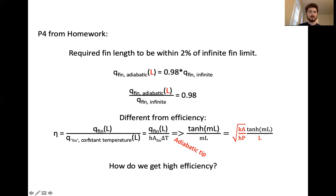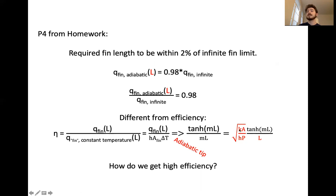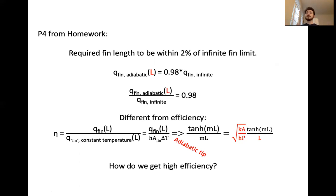What can you do to improve fin efficiency — to make your fin better approximate the idealized case where the whole surface is at base temperature? One thing is to increase thermal conductivity. If you have a carbon steel fin that isn't doing the work you need, making it out of aluminum with much higher thermal conductivity will give a higher heat rate. You can also increase the area — area and perimeter fight each other, but if you make the whole fin bigger, you're increasing the area more than the perimeter. Broadly speaking, a bigger fin will do more work.